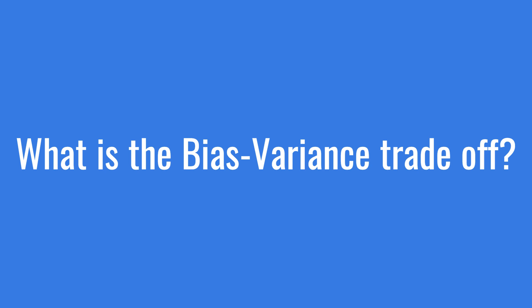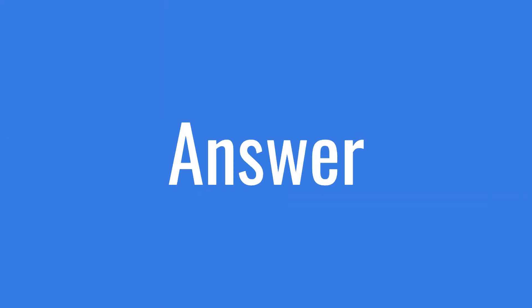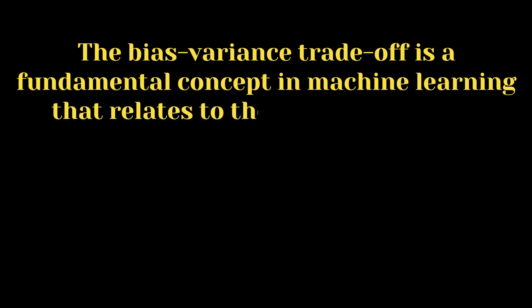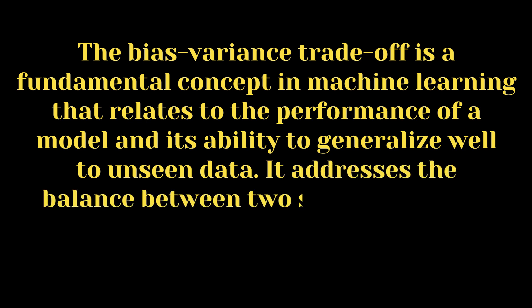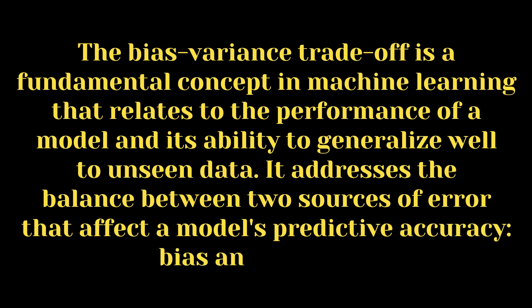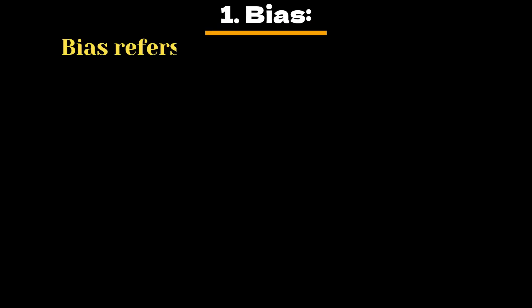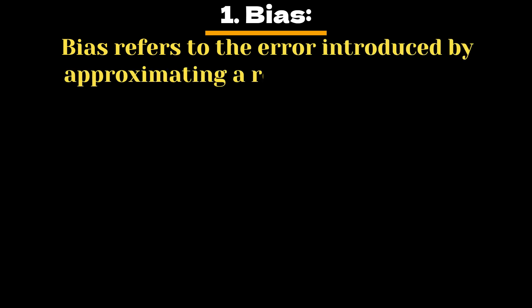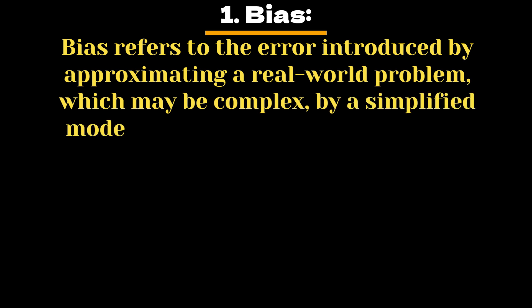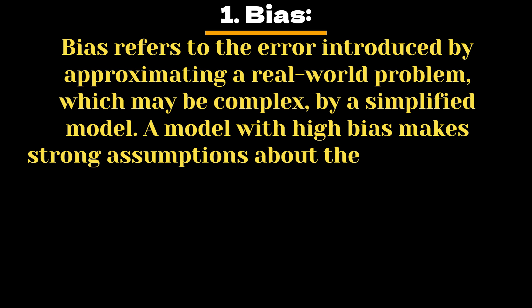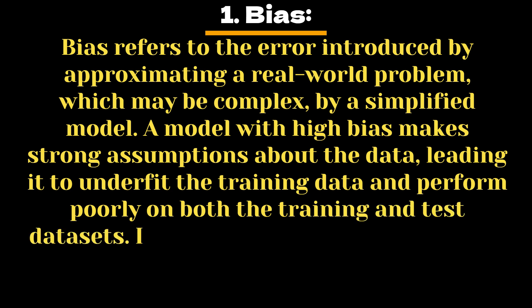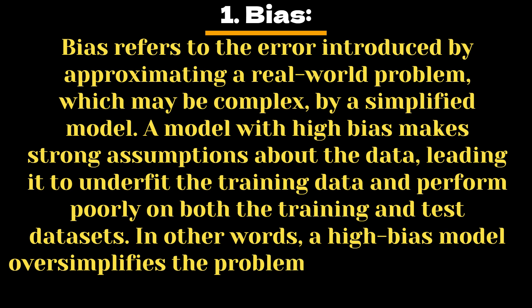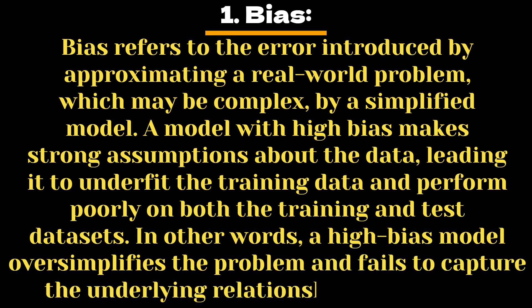What is the bias-variance trade-off? The bias-variance trade-off is a fundamental concept in machine learning that relates to a model's ability to generalize well to unseen data. It addresses the balance between two sources of error: bias and variance. Bias refers to the error introduced by approximating a complex real-world problem with a simplified model. A model with high bias makes strong assumptions about the data, leading it to underfit and perform poorly on both training and test datasets, failing to capture underlying relationships.